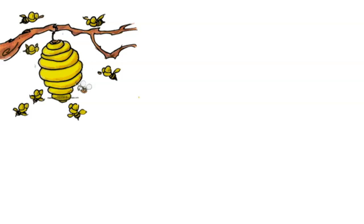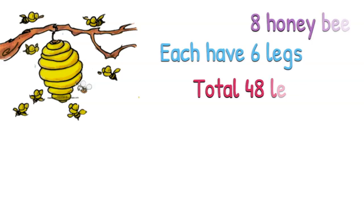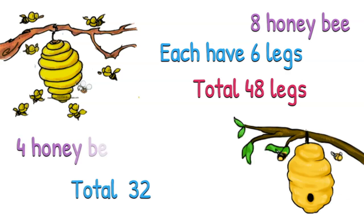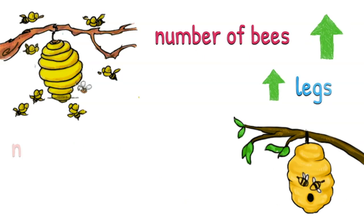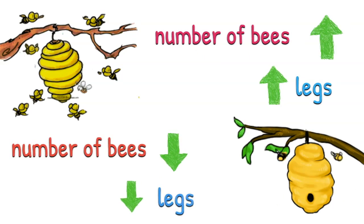Let us imagine a beehive that has a lot of bees in it. Each of those bees has six legs. If I take away half the bees, there will only be half as many legs left in the hive as well. There is a proportional relationship between the number of bees and the number of bee legs in that hive.